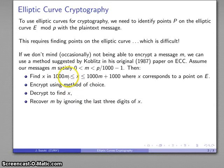If m equals 5, I'd find an x in the interval 5000 to 6000, like 5184 for example. I'll drop those last three digits of x and recover my message, which is 5.